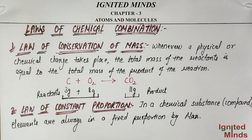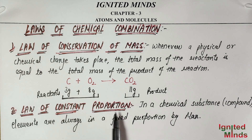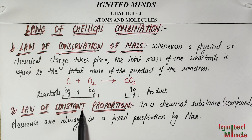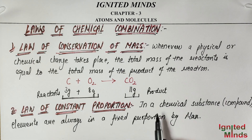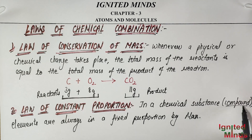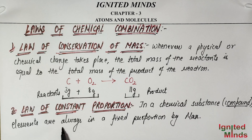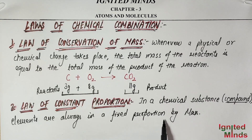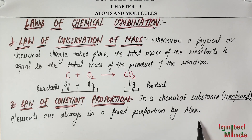Now let's discuss the Law of Constant Proportion. Proportion means ratio — a constant ratio. In a chemical substance, that is a compound, elements are always present in a fixed proportion by mass.